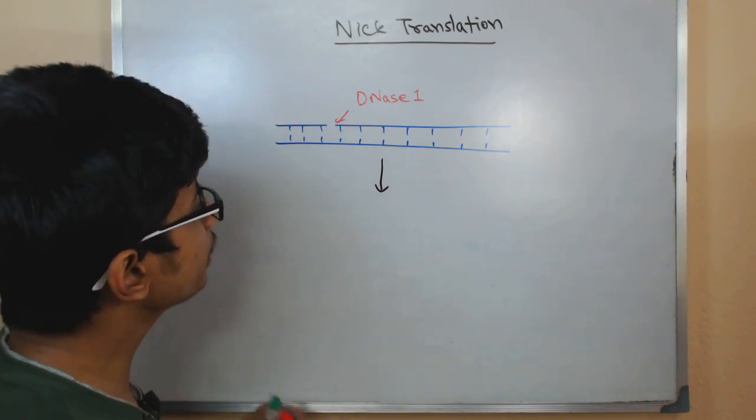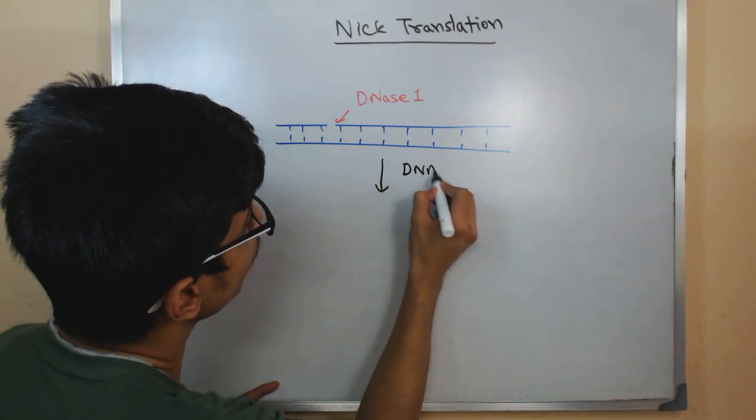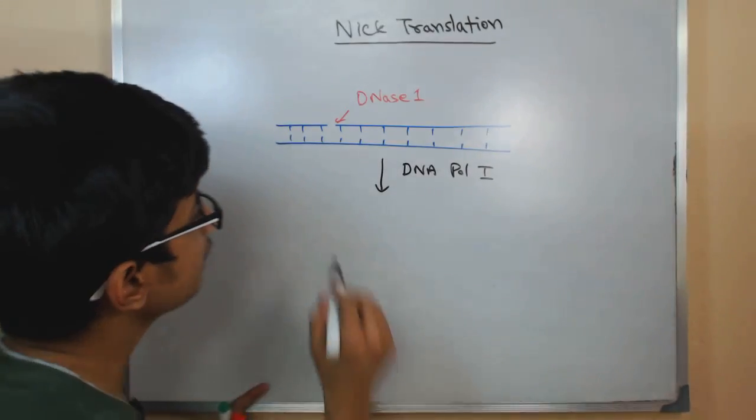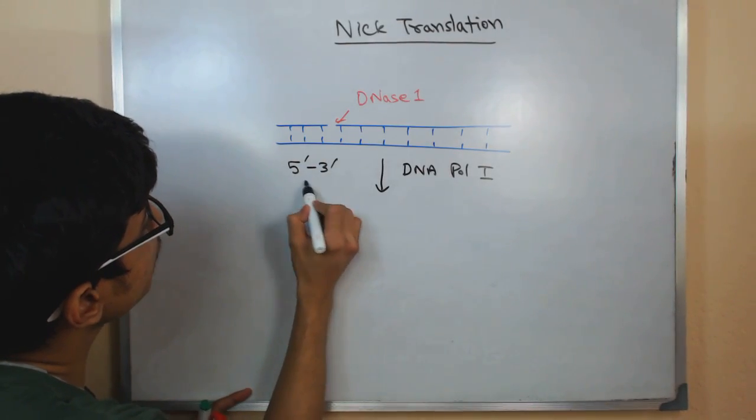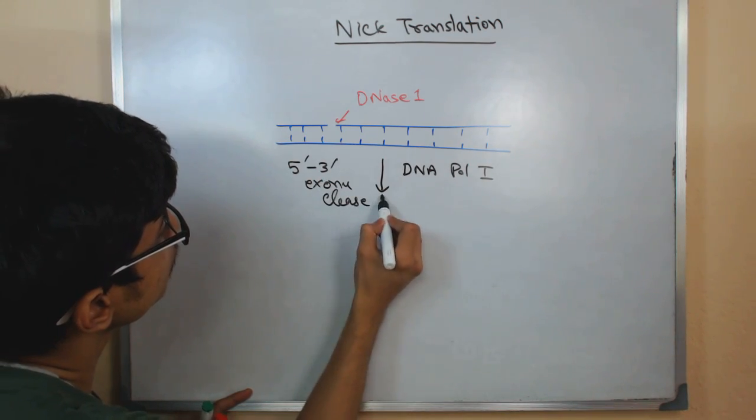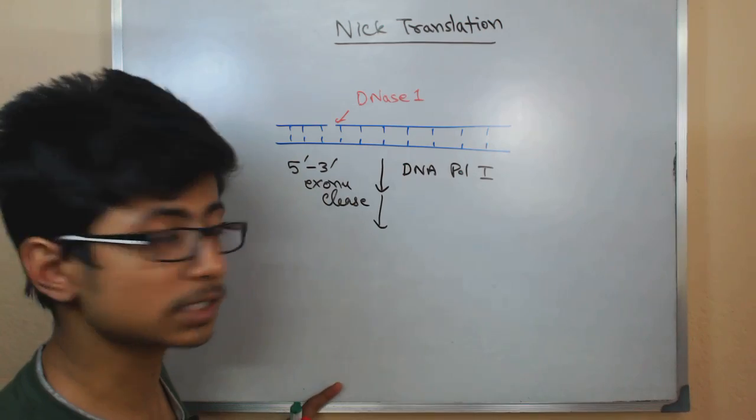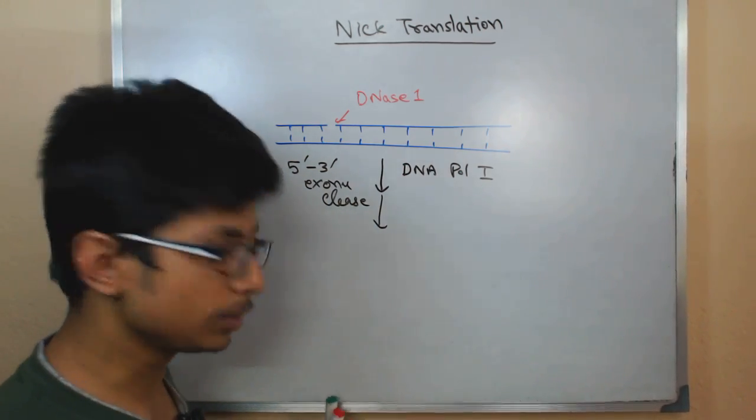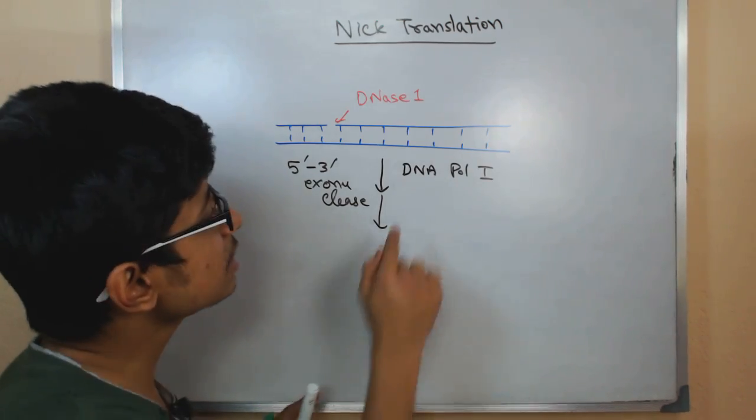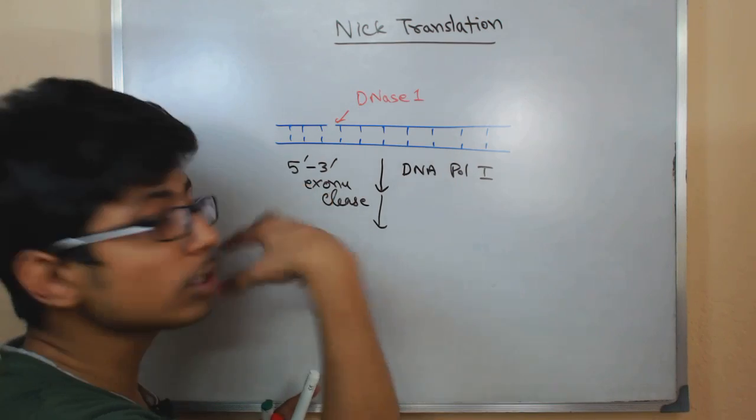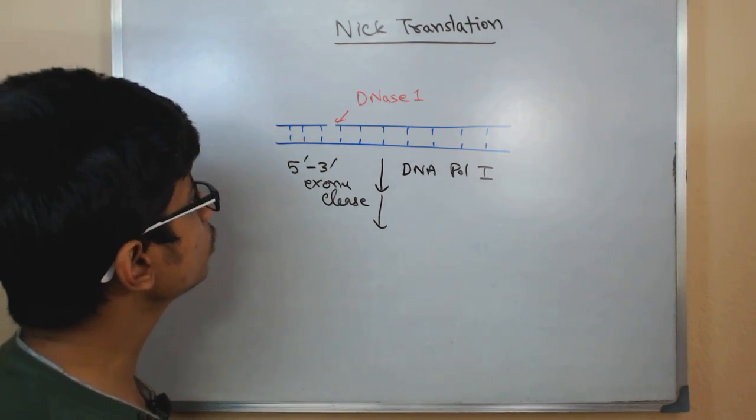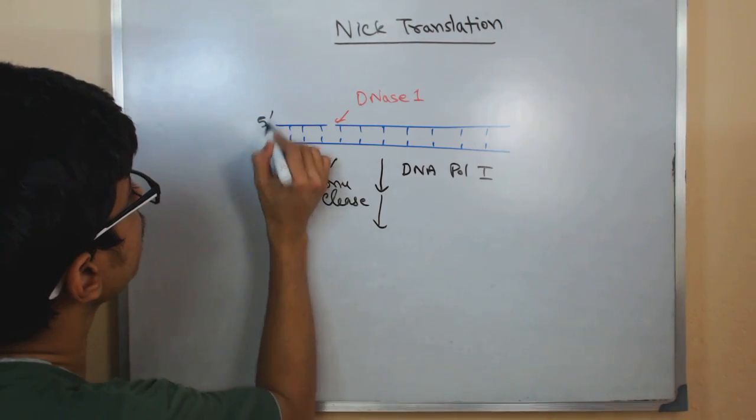then what we'll do is recruit another enzyme called DNA polymerase I, and we know DNA polymerase I has 5 prime to 3 prime exonuclease activity. That's the handy tool for us because there are other polymerases like polymerase III which have 3 prime to 5 prime exonuclease, but in this case we use DNA polymerase I which has 5 prime to 3 prime exonuclease activity.